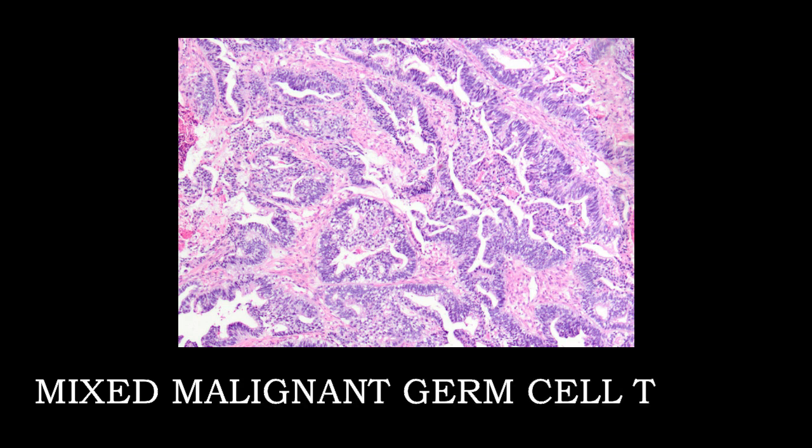Usually two components are present — dysgerminoma with yolk sac tumor, or dysgerminoma with other germ cell tumors. In certain tumors, more than three or even five components are present. Identifying all components will determine the prognosis of the tumor.